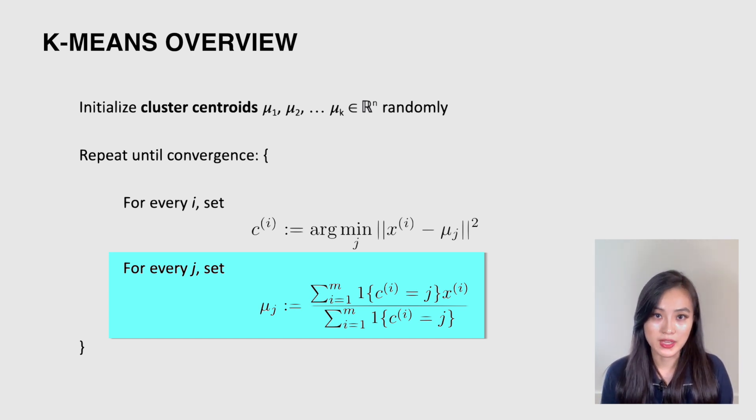For each cluster, we get the mean of all points that belong to that cluster, then we update its centroid with the mean. In this formula, the numerator is the sum of all points belonging to one cluster, and the denominator is a count of points. This gives us the mean of all points.